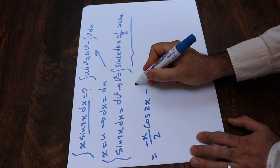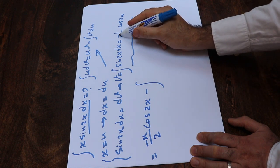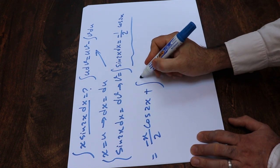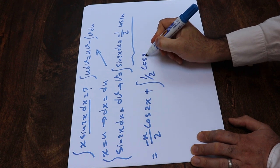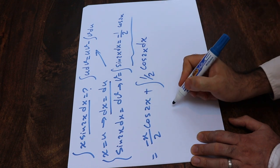uv minus integral of v, that is minus 1 divided by 2. So minus times minus will be plus 1 divided by 2 cosine 2x, v times du. And instead of du, I write dx.